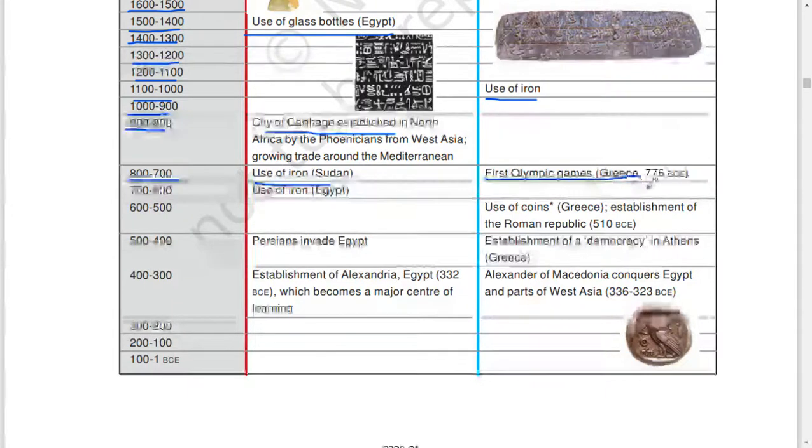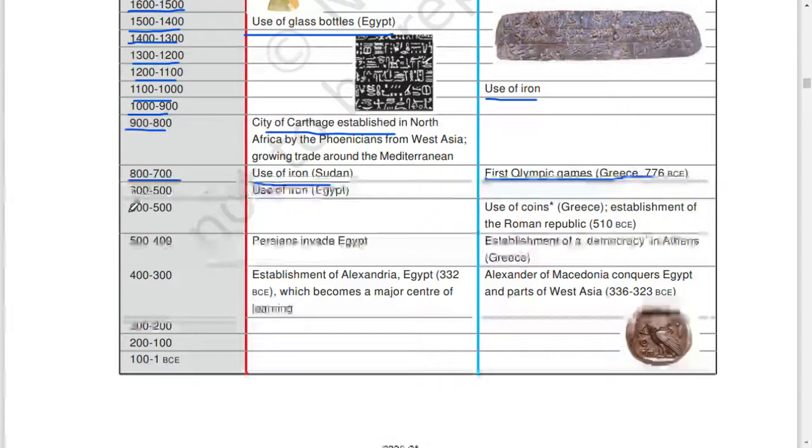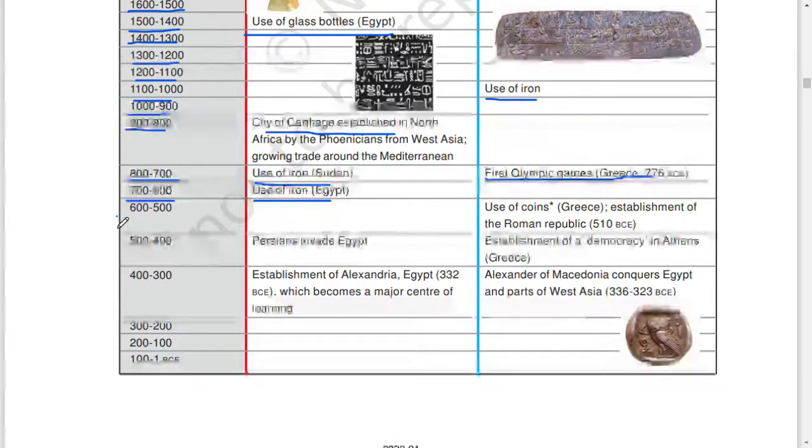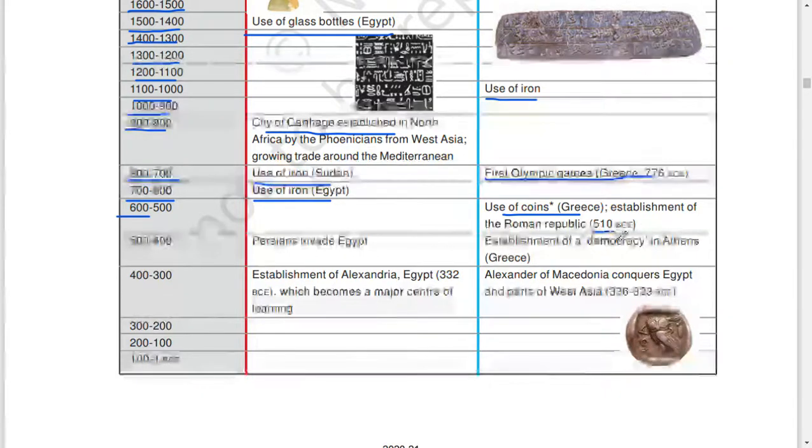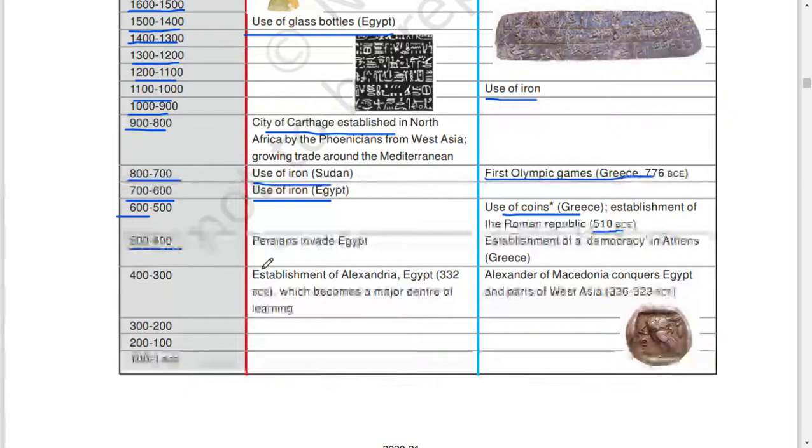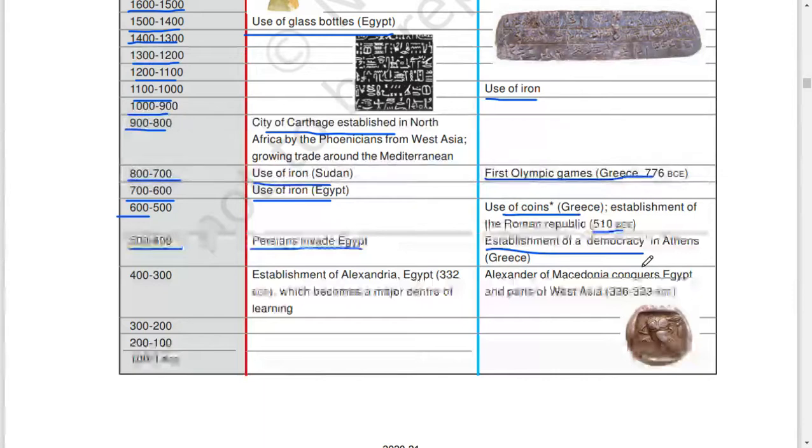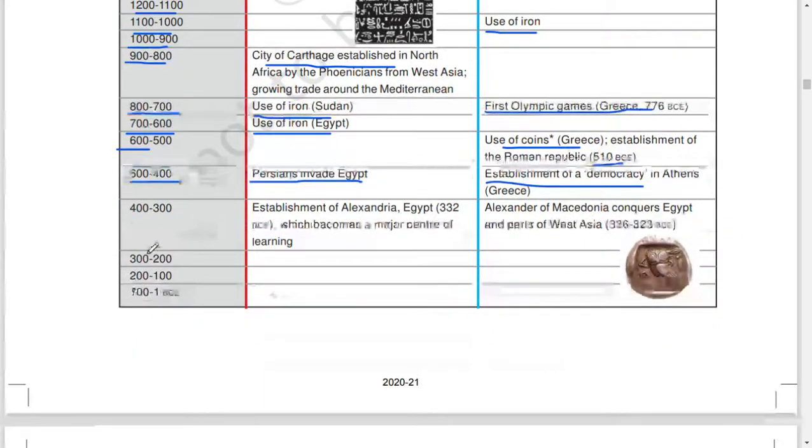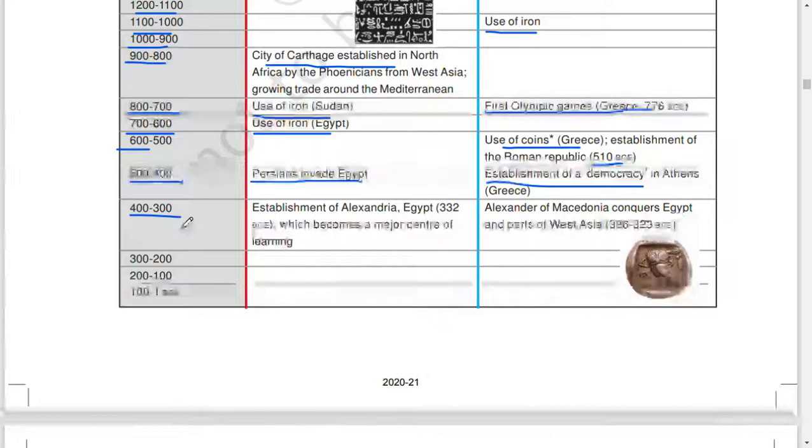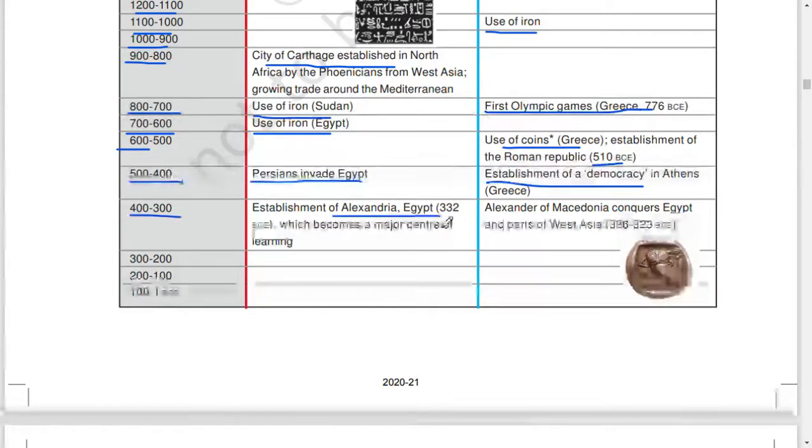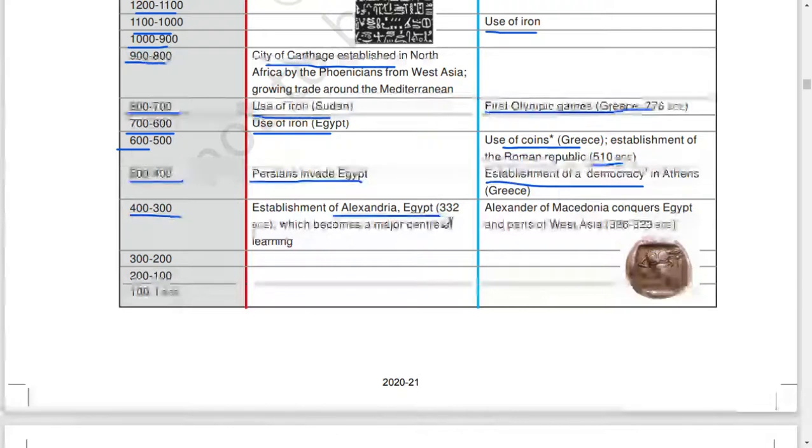800 to 700: use of iron, Sudan. First Olympic Games, Greece, 776 BCE. 700 to 600: use of iron, Egypt. 600 to 500: use of coins, Greece, establishment of Roman Republic, 510 BCE. 500 to 400: Persians invade Egypt, establishment of democracy in Athens, Greece.